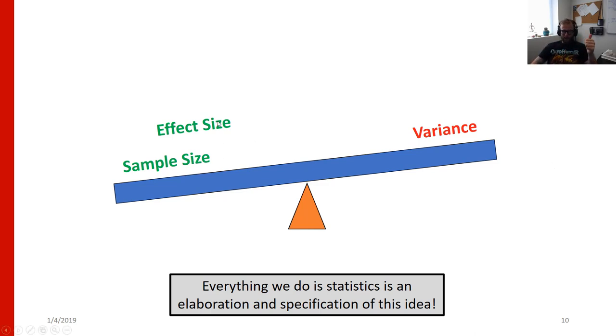Conversely, if we have a small effect, but maybe we can remove some of the variability, for instance, in the way that we design our experiment or the way we design our conditions, we can actually use a smaller sample because now the variance has gone down. And everything we do in statistics is going to be an elaboration and specification of this idea. We're going to think about how these factors work against each other and how they tip this balance and how far does this seesaw need to tip before we think that a relationship is statistically interesting or unlikely to have happened essentially by chance. And that's not the best explanation. And we'll get into more detailed explanations of what we actually mean as the course goes forward.